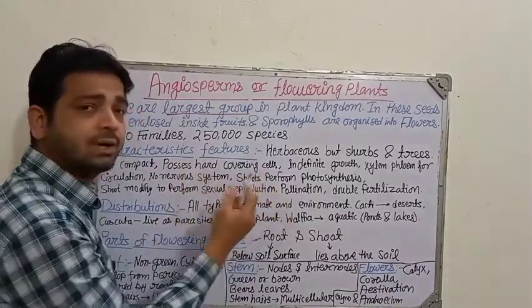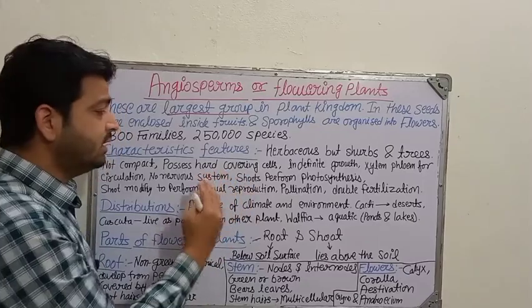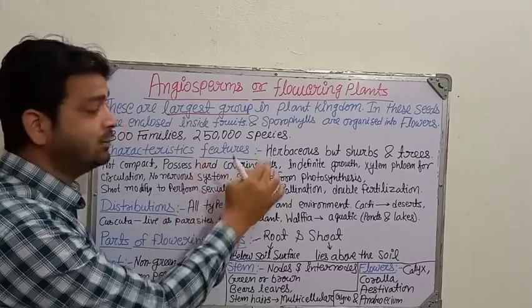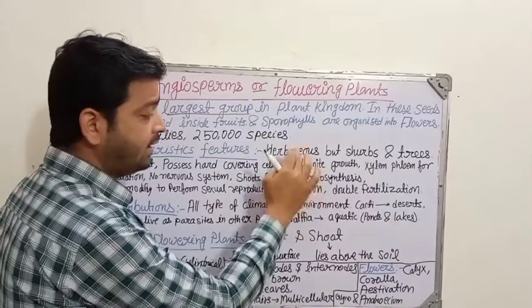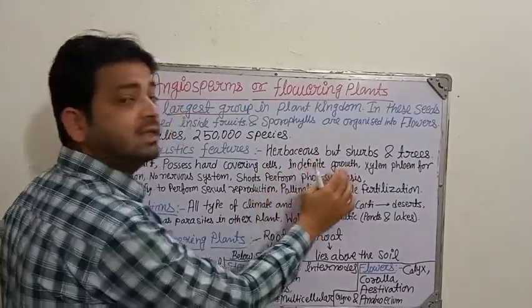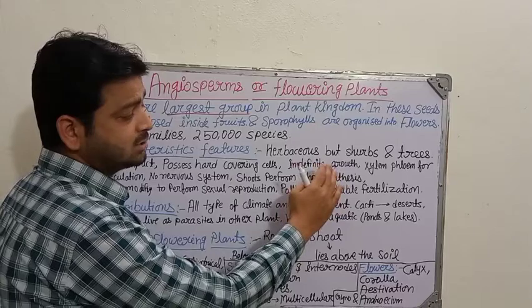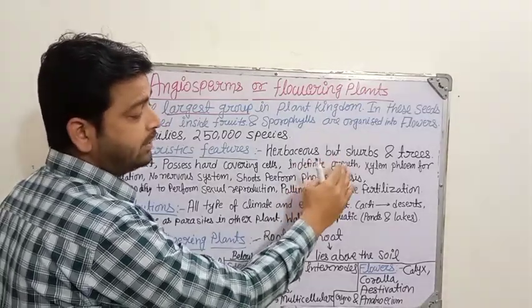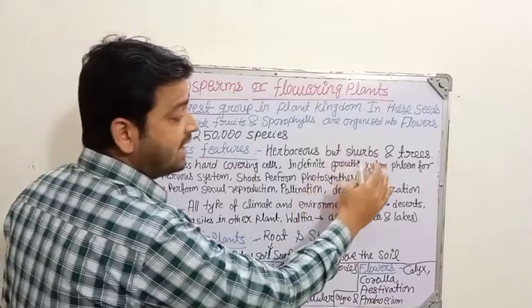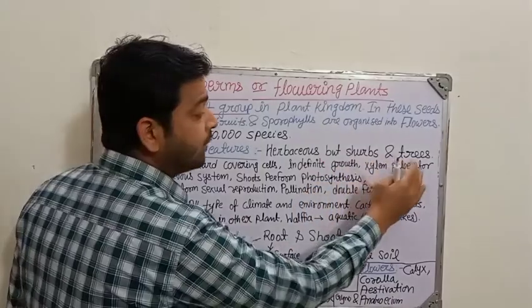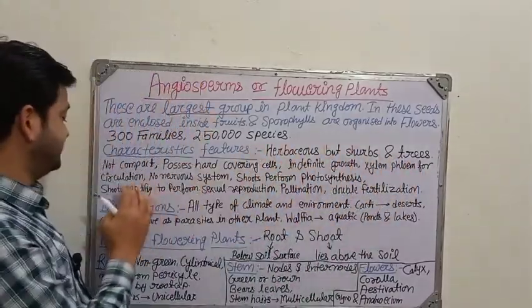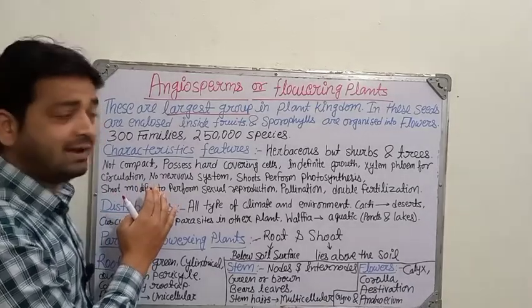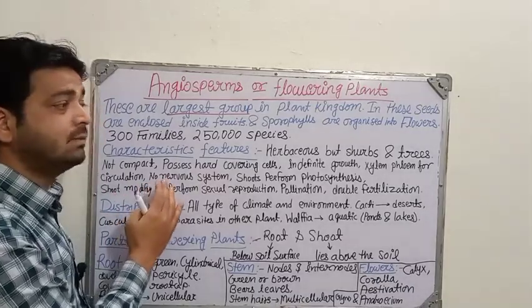Flowering plants possess hard covering cells — whatever the plant cells, they will be having a hard covering. They also have indefinite growth: as soon as they get the further platform, they are going to have further growth. Xylem and phloem provide the facility for circulation.